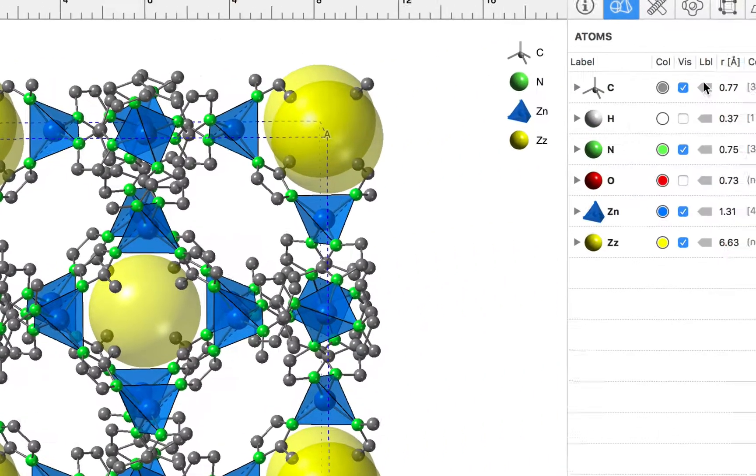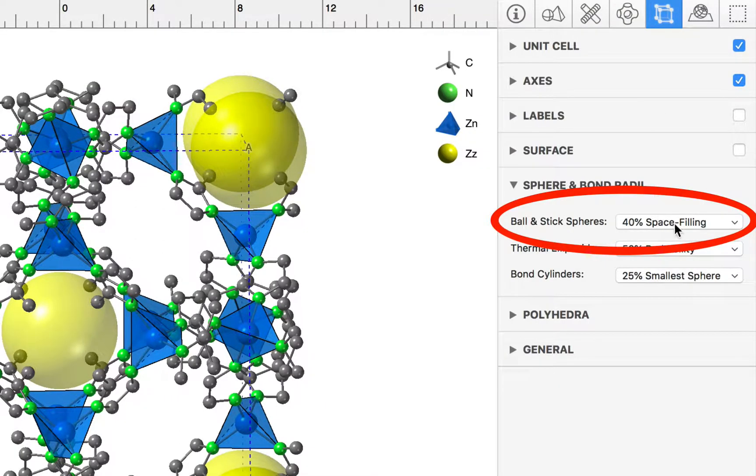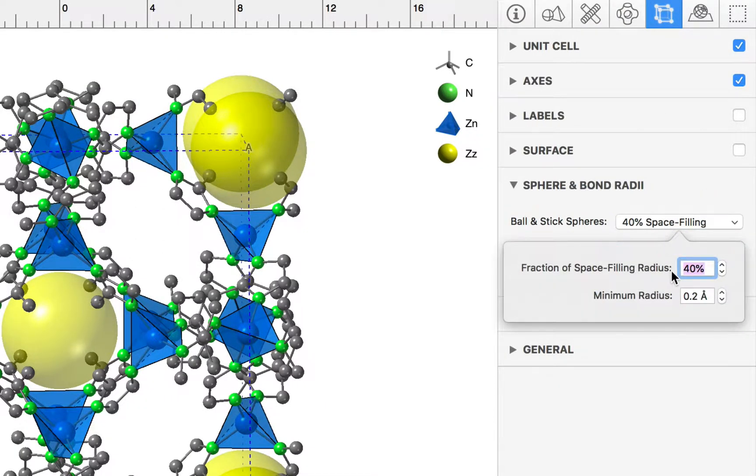If we go to CrystalMaker's model inspector, you'll see that ball-and-stick spheres are plotted at 40% of their space-filling radii.